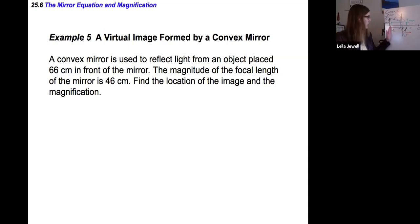This is a convex mirror, so having this picture up is really convenient. Objects placed 66 centimeters in front of the mirror, so that's my object distance, d_o equals 66 centimeters. The focal length magnitude equals 46 centimeters. But note it says magnitude, and because it's convex, we need to fill in a negative sign. I'm going to put this in different colors so it really pops.